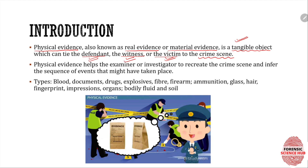Physical evidence helps the examiner or investigator to recreate the crime scene and infer the sequence of events that might have taken place. We often hear about reconstruction of the crime scene — for that we need physical evidence. With the help of these evidences, we can determine the sequence: what happened first, where the culprit went first, then where he might have gone, and what he might have done.